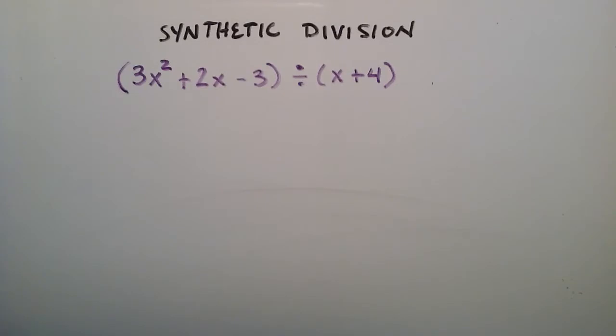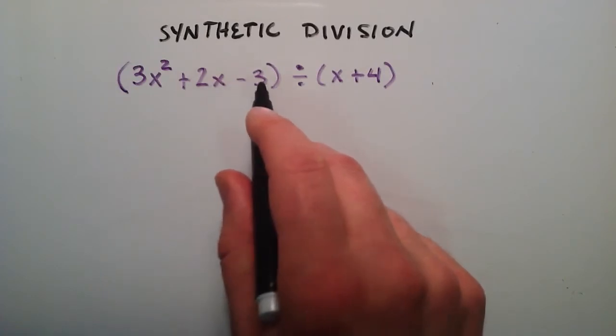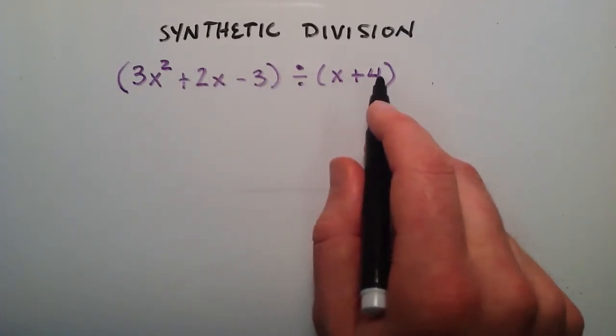In the previous examples, I've showed you some examples where we have a remainder of zero every time. So I wanted to show you what happens when the remainder is not zero. We're going to do 3x squared plus 2x minus 3 and divide that by the polynomial x plus 4.